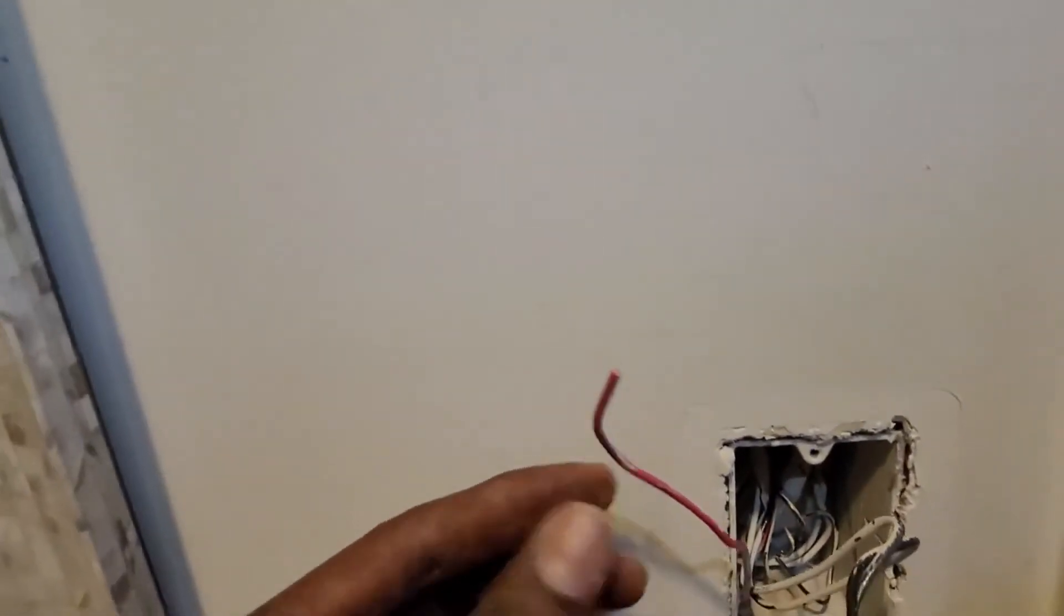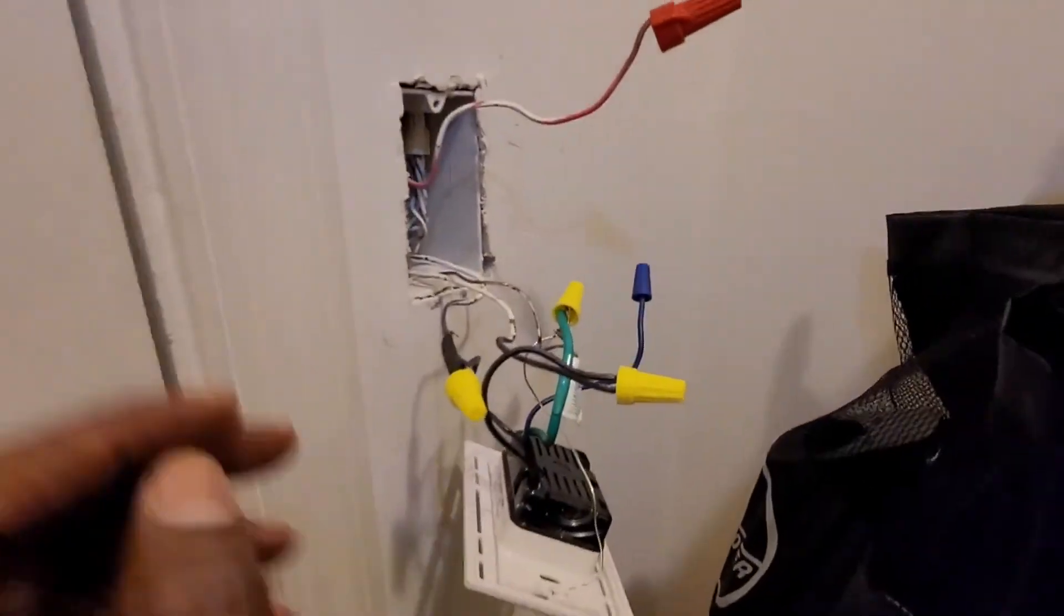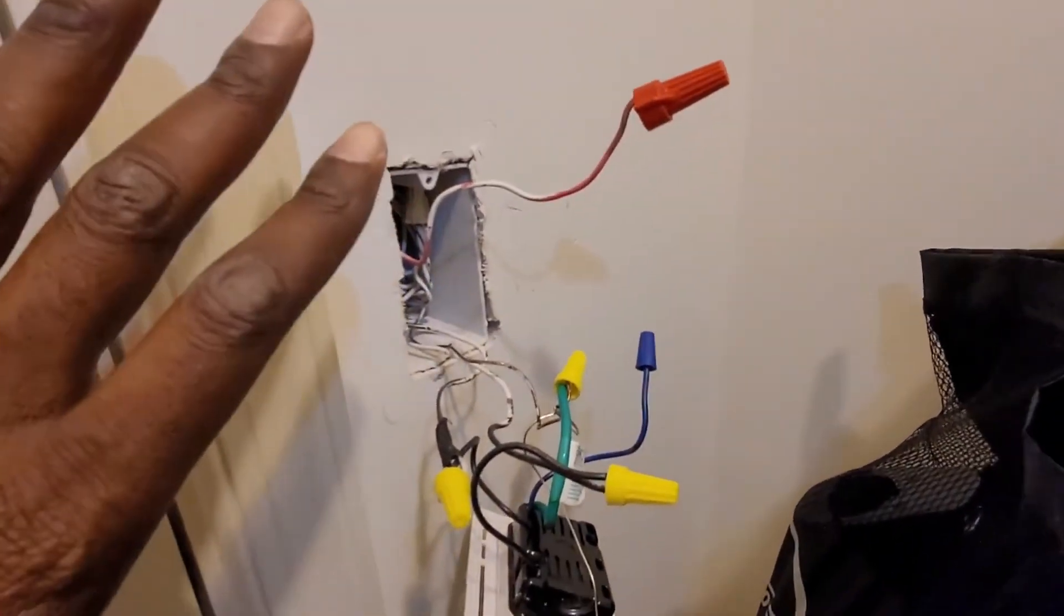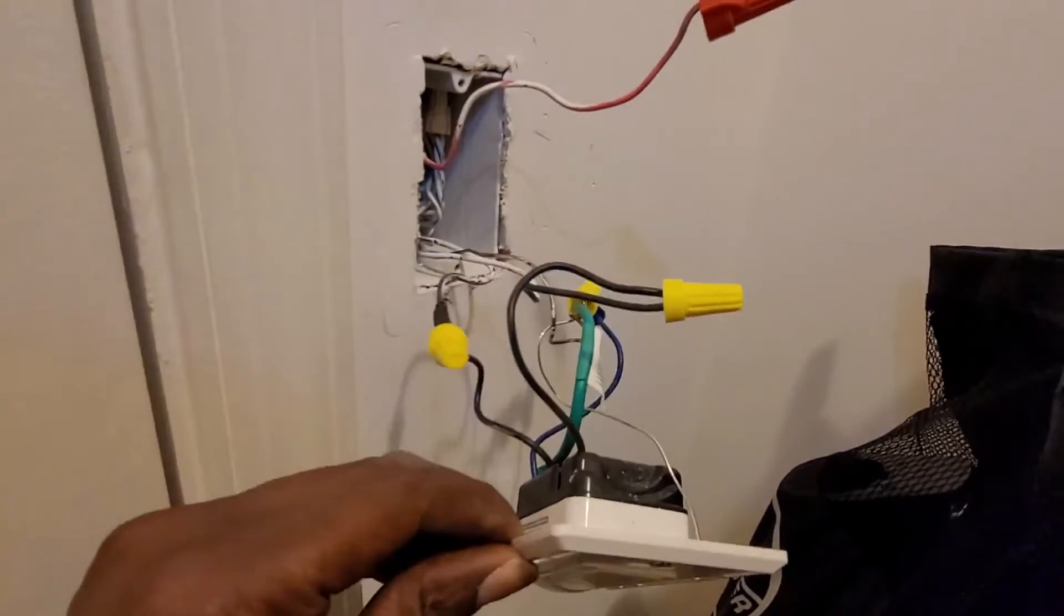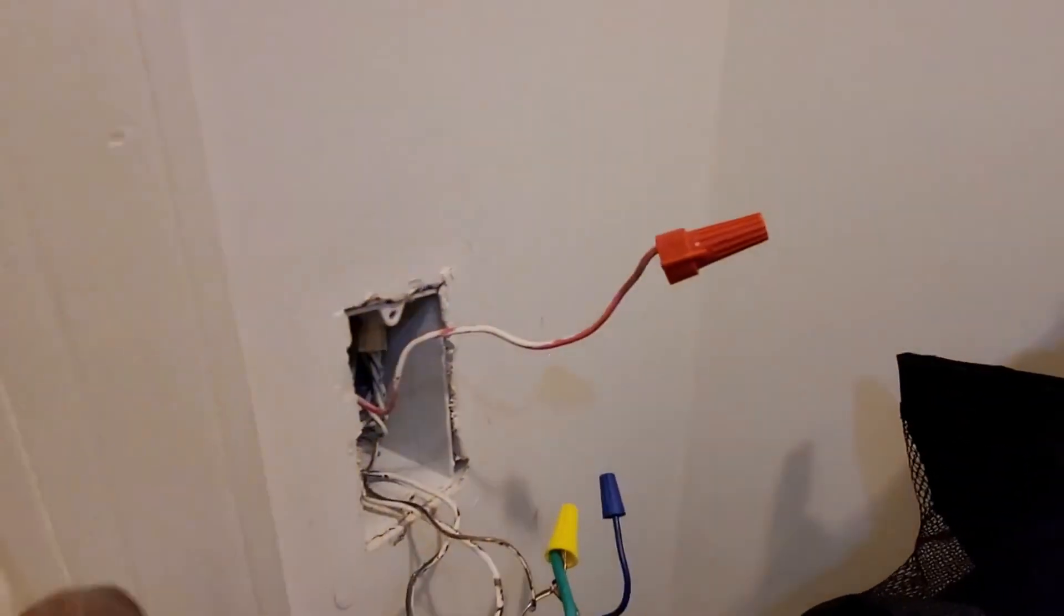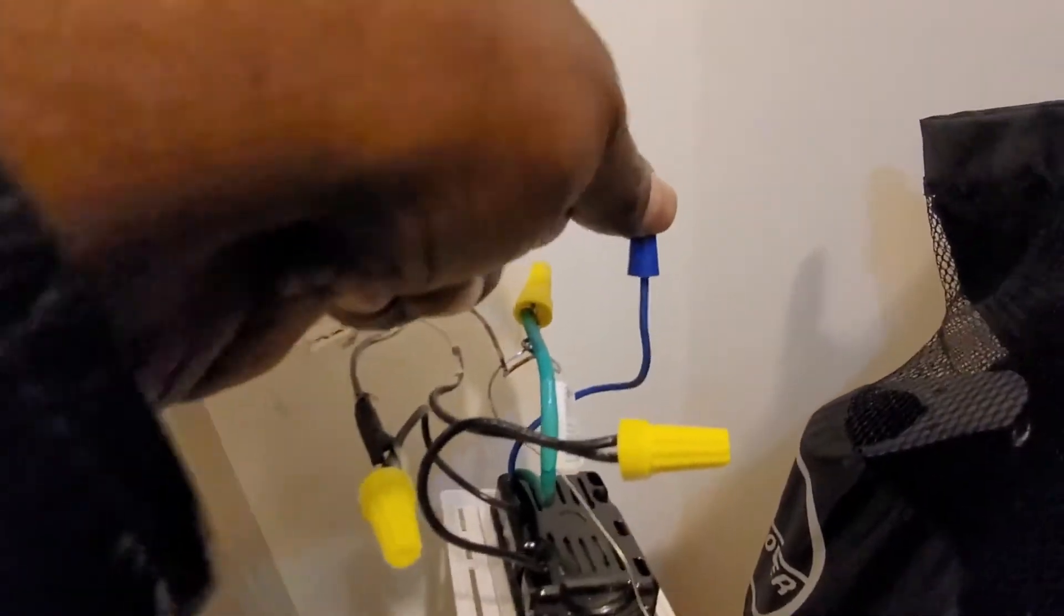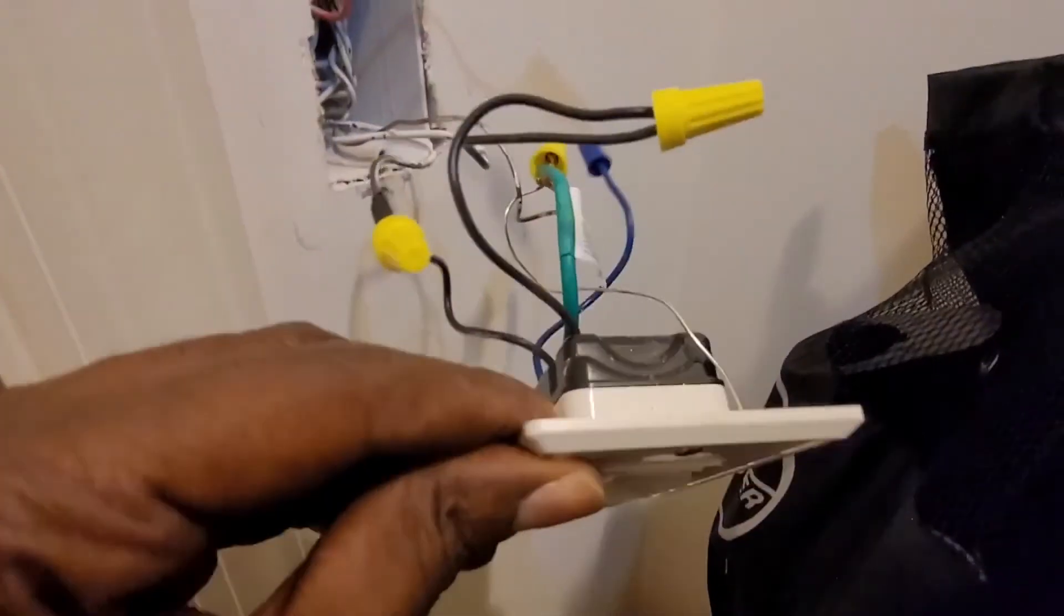What I did here is trim off this red wire that's not being used and cap it. So I converted it to a single pole. I removed this red one I don't use anymore, cut it off, and also removed this one coming from the sensor.